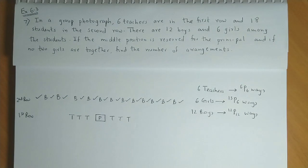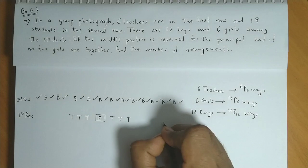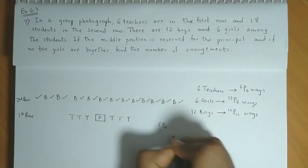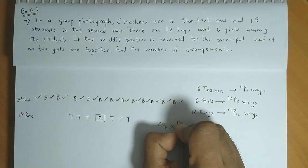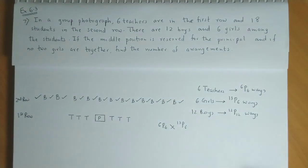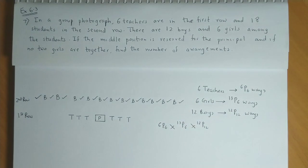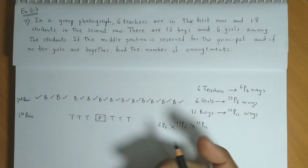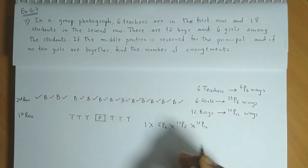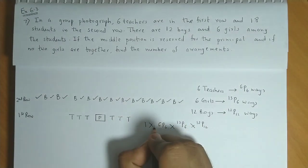So we have considered all the arrangements. Finally, the total arrangements would be 6P6 for the teachers and 13P6 for the girls and 12P12 for the boys. And principal ka toh one way hai, so you can just multiply it by 1. So 1 is for the principal.